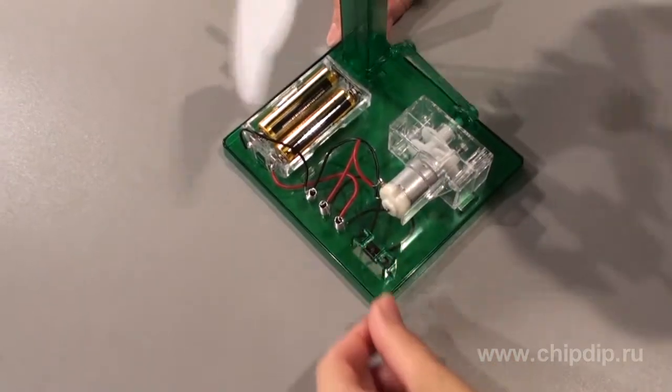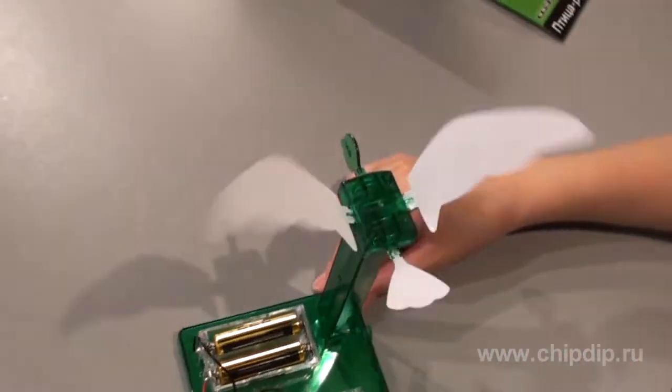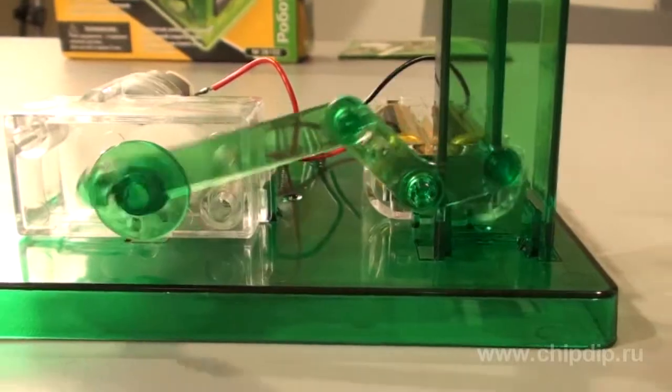Insert batteries and shift the slight switch to the left to see how the bird robot flies.